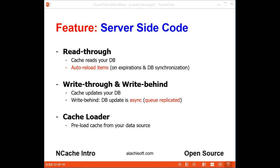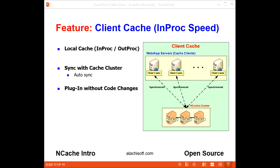Finally, a cache loader automatically pre-loads the cache when you start the cache. NCache is also the only solution in .NET to provide a client cache feature, also called a near cache. Client cache gives you in-proc performance as if the cache data is kept within your application process. It is a local cache to your application, but stays synchronized with the caching tier for all updates by other applications or users, giving your application a significant performance boost.